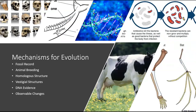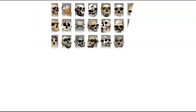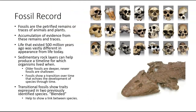Evolution doesn't happen by chance — there are specific mechanisms that lead to evolution. Some of those mechanisms are: the fossil record, animal breeding through selective breeding, homologous structures, vestigial structures, DNA evidence, and actually observing evolution happening on a small scale. Let's talk about what each of these mechanisms means and how they lead to evolution. Starting with mechanisms of evolution — specifically the fossil record.